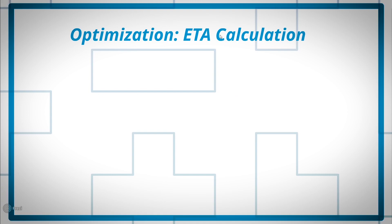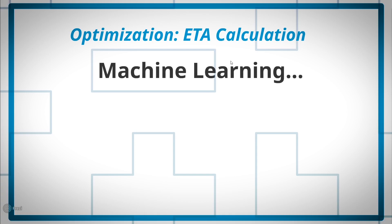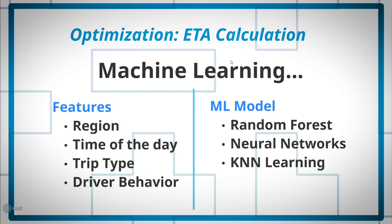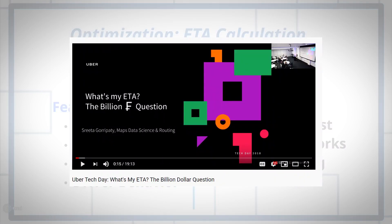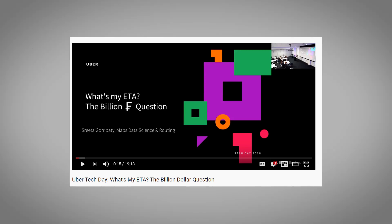Another optimization is improving ETA calculation using machine learning. Candidates often mention ML but get blindsided by follow-up questions like 'how would you do it?' There are two important things: selecting the right features and choosing the right ML model. For feature engineering, potential features include region, time of day, trip type, and driver behavior. For model selection, we can use Random Forest, Neural Networks, or KNN, as these yield much more accurate results. You can also refer to a YouTube talk by Shreya from Uber explaining this process in detail.